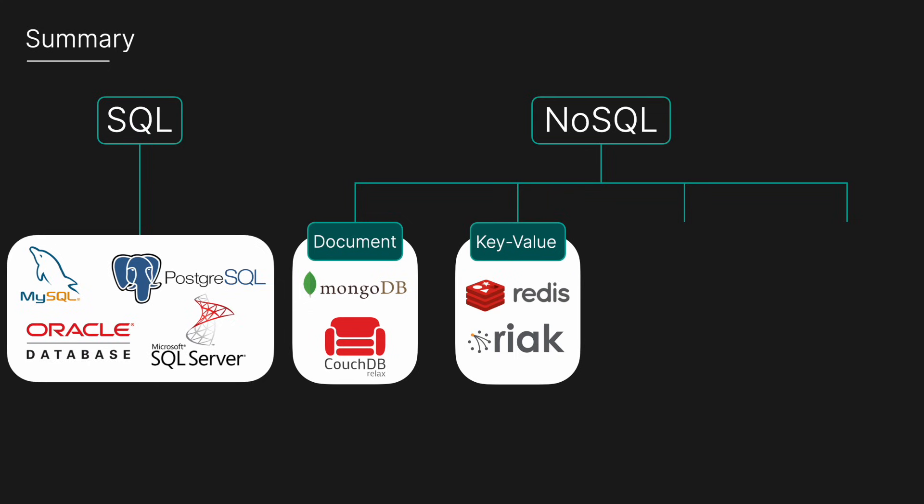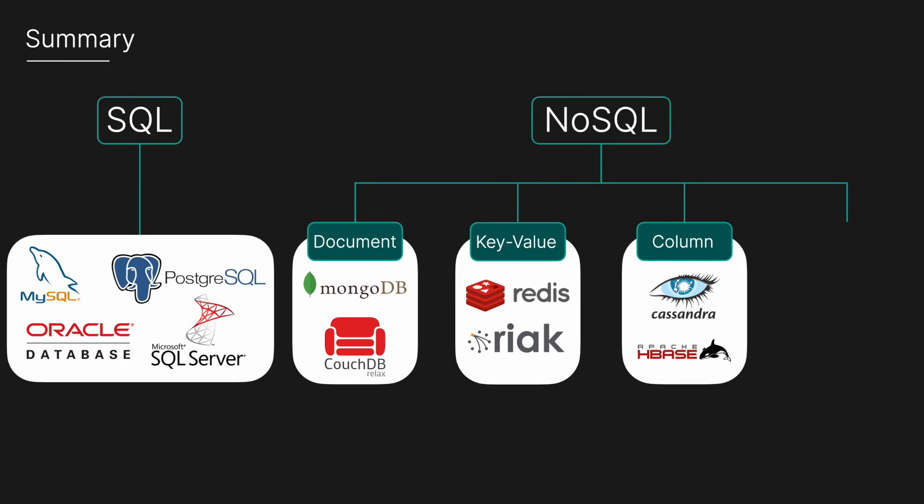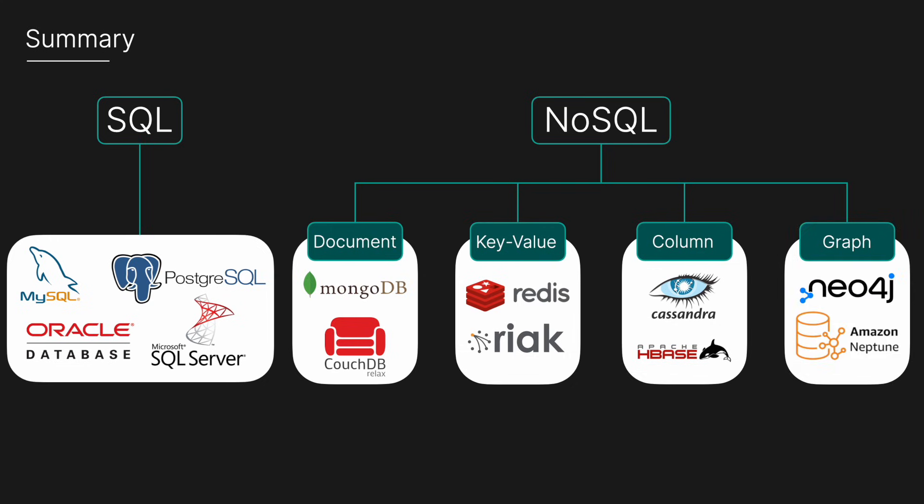Key-value stores store data as key-value pairs — think Redis and Riak. Column family stores store data in tables but each row can have a variable number of columns — think Apache Cassandra and HBase. And finally, graph databases represent data as nodes and edges making relationships first-class citizens — think Neo4j and Amazon Neptune.